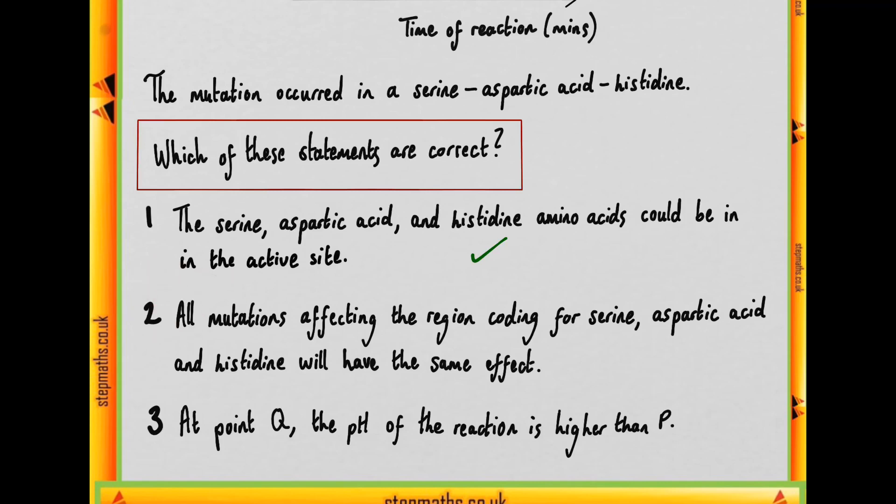Moving on to statement two: all mutations affecting the region coding for serine, aspartic acid, and histidine will have the same effect. Well, the key word here is that all mutations will have the same effect. We know that there are many different types of mutations.